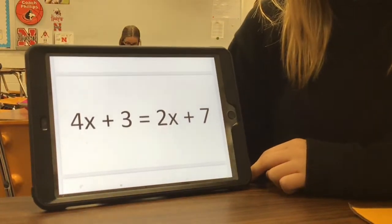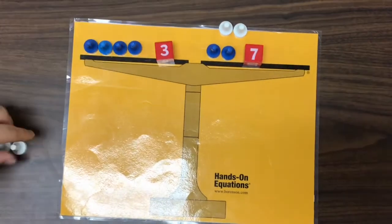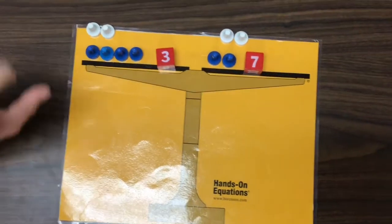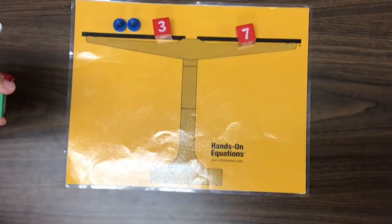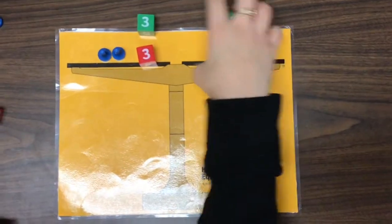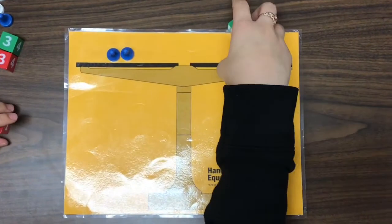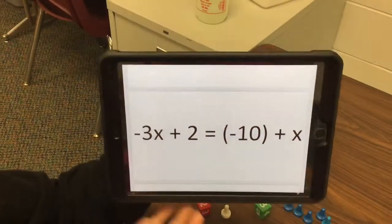My first problem is 4x plus 3 equals 2x plus 7. I'm going to take two white pawns and put on each side, and then you can take them away. So then I'm going to put 3 on both sides, and you can take that away, and then this should be a positive. Your answer is x equals 3.